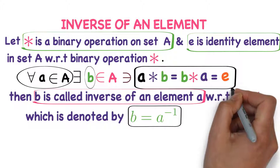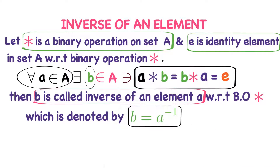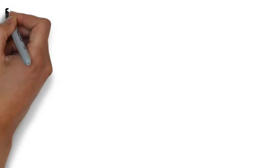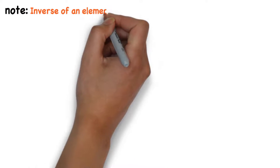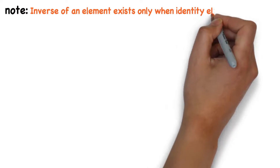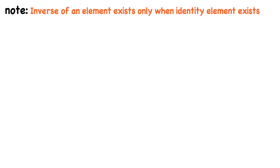In the condition, replace B with A inverse. Then you get: A star A inverse equals A inverse star A equals E. Note that the inverse of an element exists only when the identity element exists. If the identity element doesn't exist, then inverse never exists.